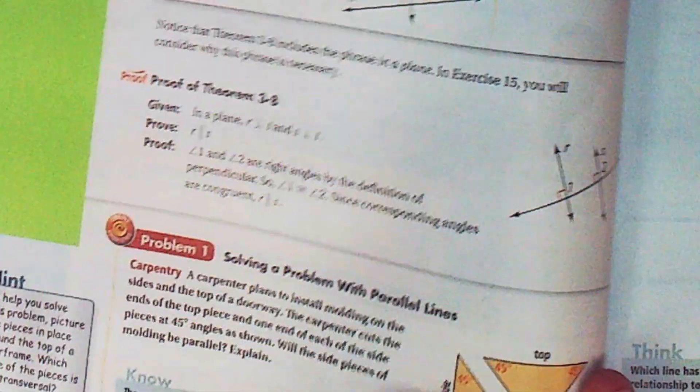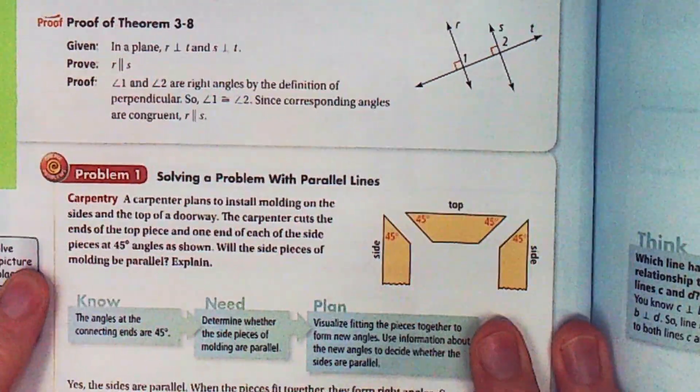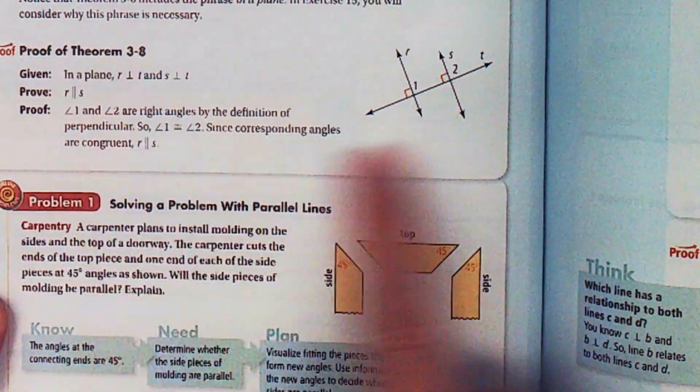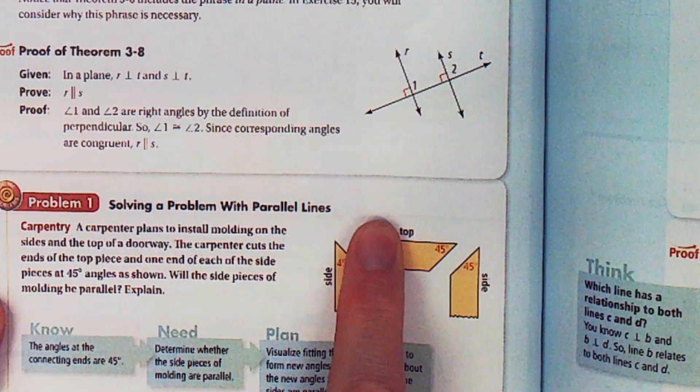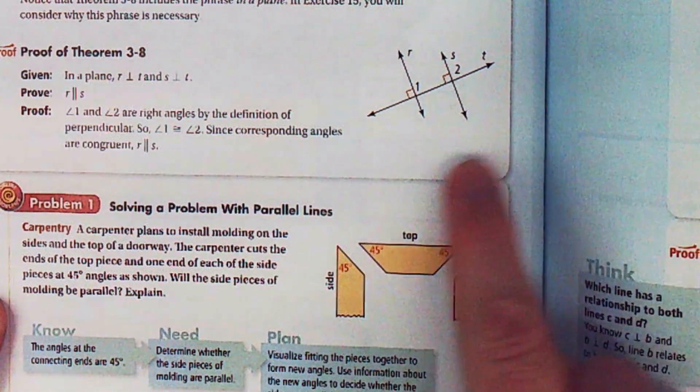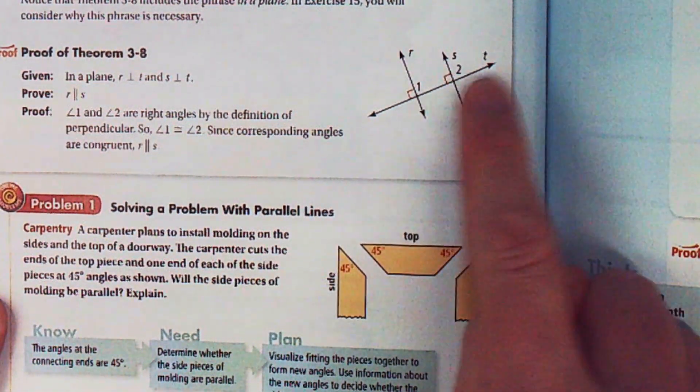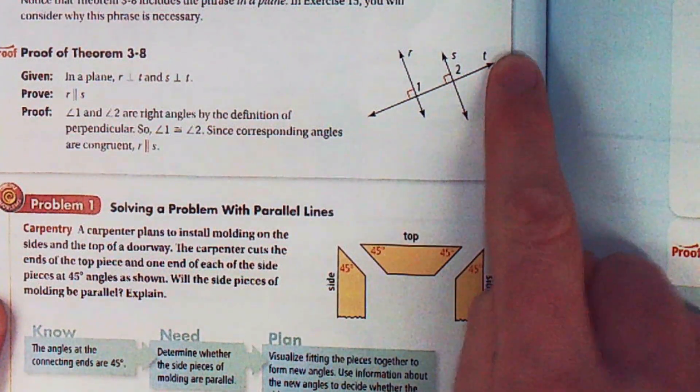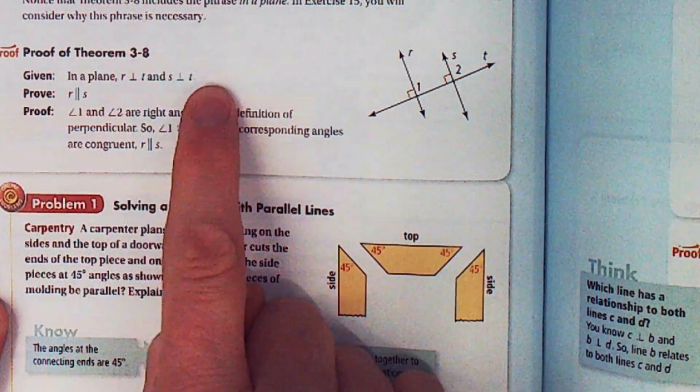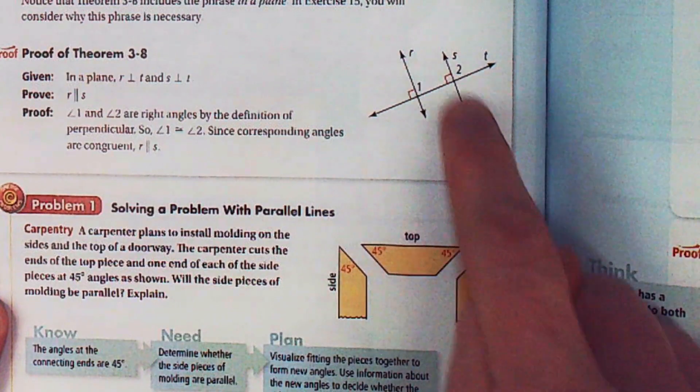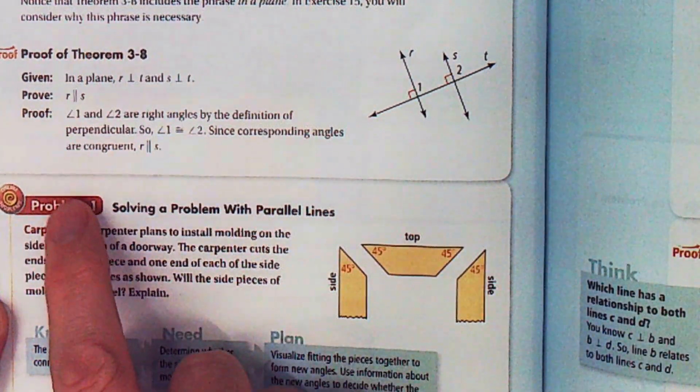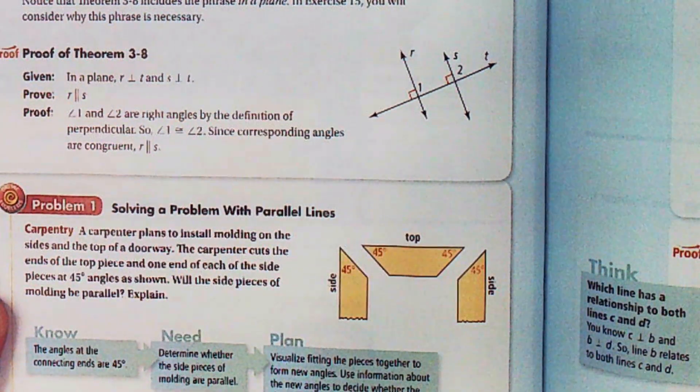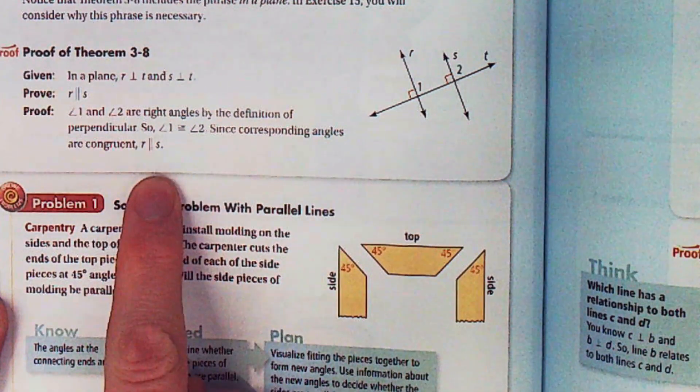You're given two lines are both perpendicular to the same line. So in a plane, two lines are perpendicular and prove that these two lines are parallel to each other. And their proof is literally two sentences long.